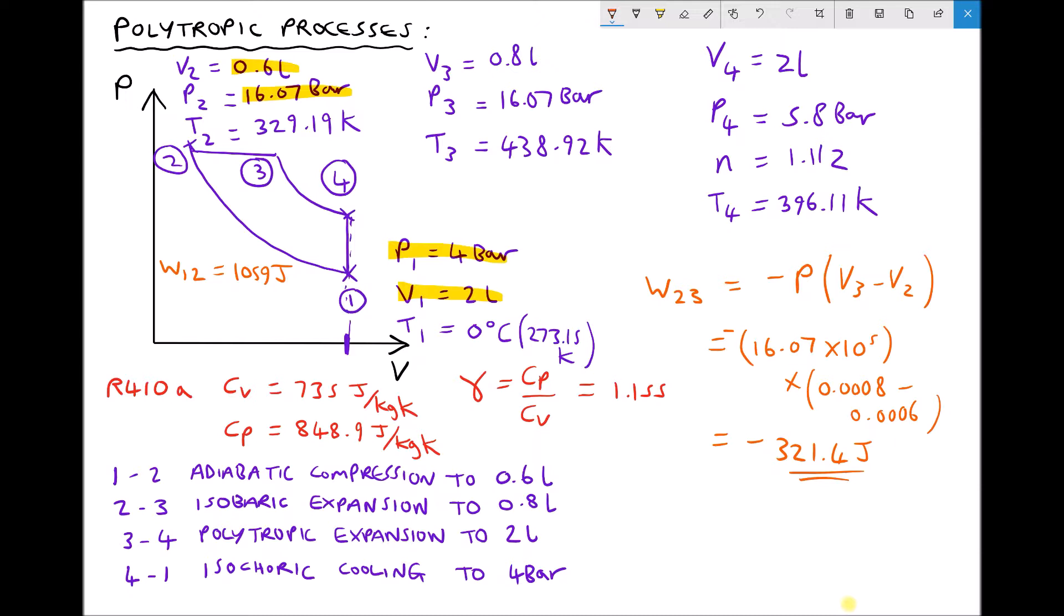Now running that through the calculator gives us an answer equal to minus 321.4 joules. So to be consistent we'll express that to the nearest whole number minus 321. So transferring that to our diagram we have W23 equals minus 321 joules.